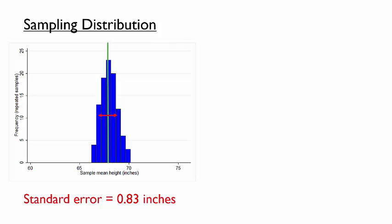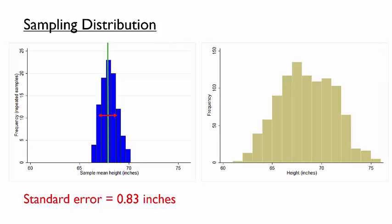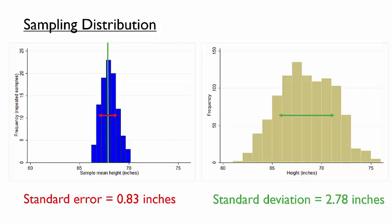It may be worth distinguishing the sampling distribution from the distribution of height in the population. They have similar means but different widths. The standard deviation of heights in the population is 2.78 inches, meaning individual heights tend to vary by that amount. Both values may be useful, but they tell us very different things: the standard deviation of heights tells us the variation in heights of individuals, while the standard deviation of sample means — the standard error — tells us the precision of a sample estimate.